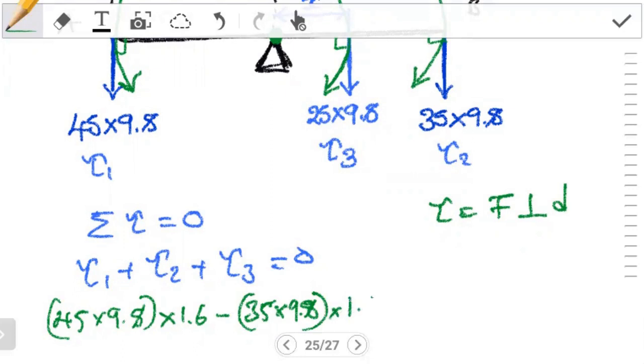Now torque three. We have 25 multiplying 9.8, the weight, multiplying the distance. This is the one we want to find, x. This should add up to zero.